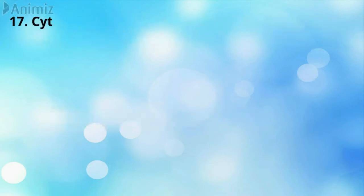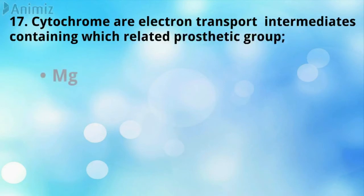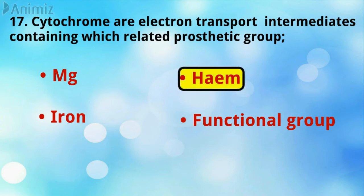Cytochromes are the electron transport intermediates containing which related prosthetic group? Heme is the correct answer.